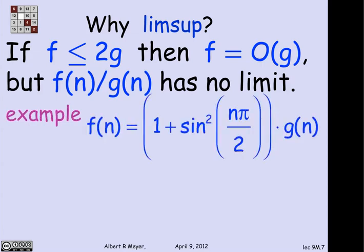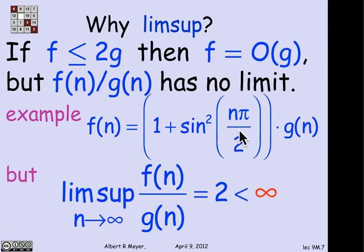Let's see how that could happen. Suppose that f is in fact equal to g times a number that varies between 1 and 2. That's an example where sine of n pi over 2 varies between 0, 1, and minus 1, and you square it, it becomes 0 or 1, and you add 1 to it, it becomes 1 or 2. So this is an expression which, as n grows, alternates between the values 1 and 2. And I'm multiplying g of n by this factor that's either 1 or 2, but the limit of f of n over g of n does not exist. It's alternating between 1 and 2. On the other hand, the limsup of f over g is 2, which is finite. And therefore, according to the limsup definition, indeed f is O of g.